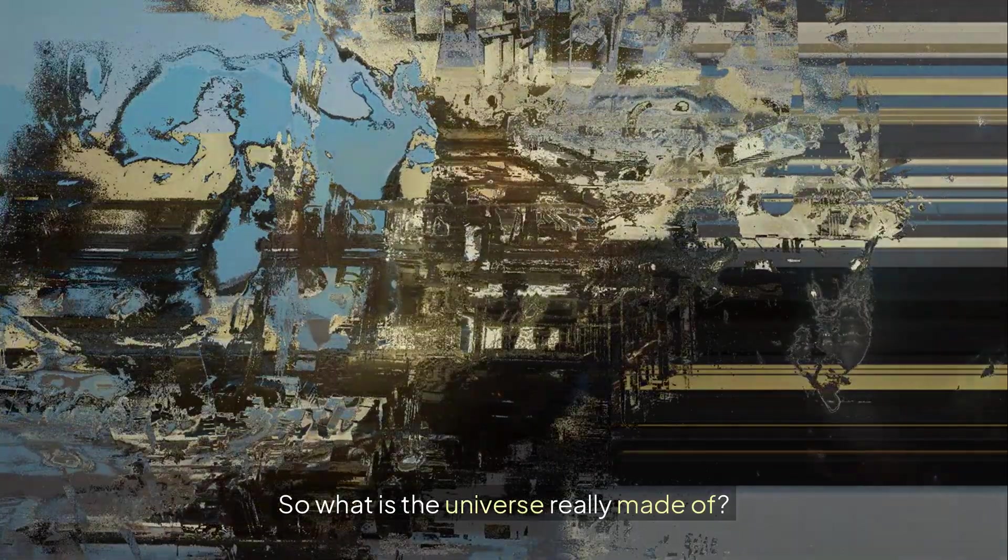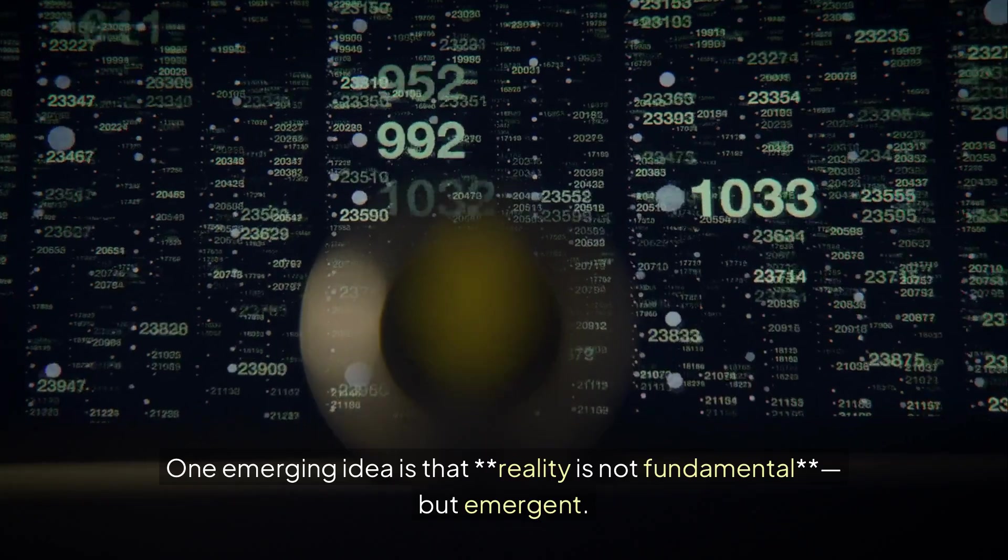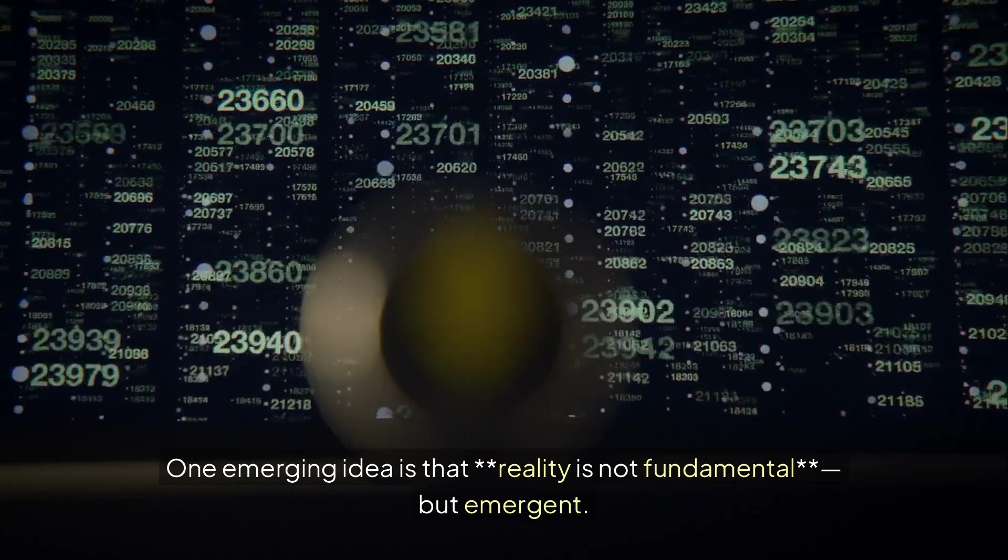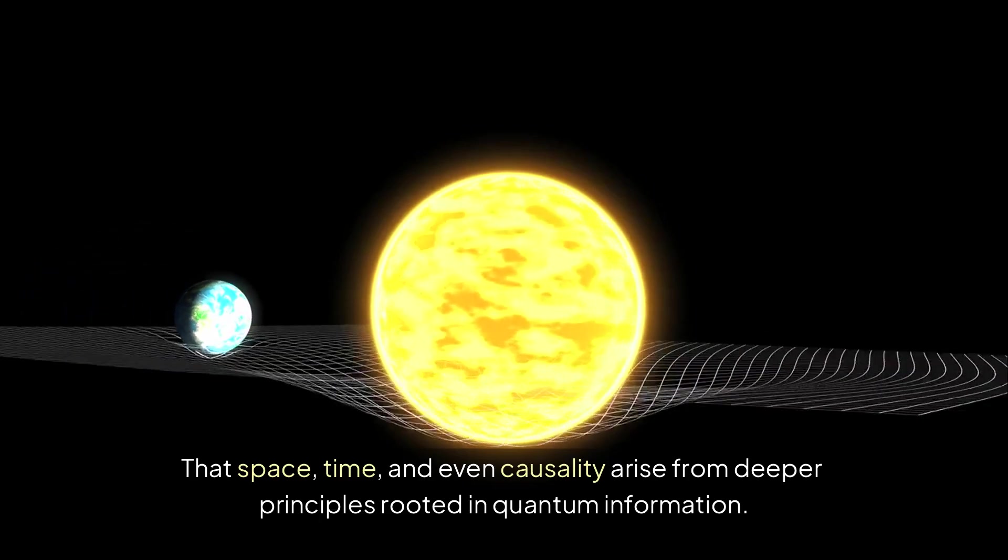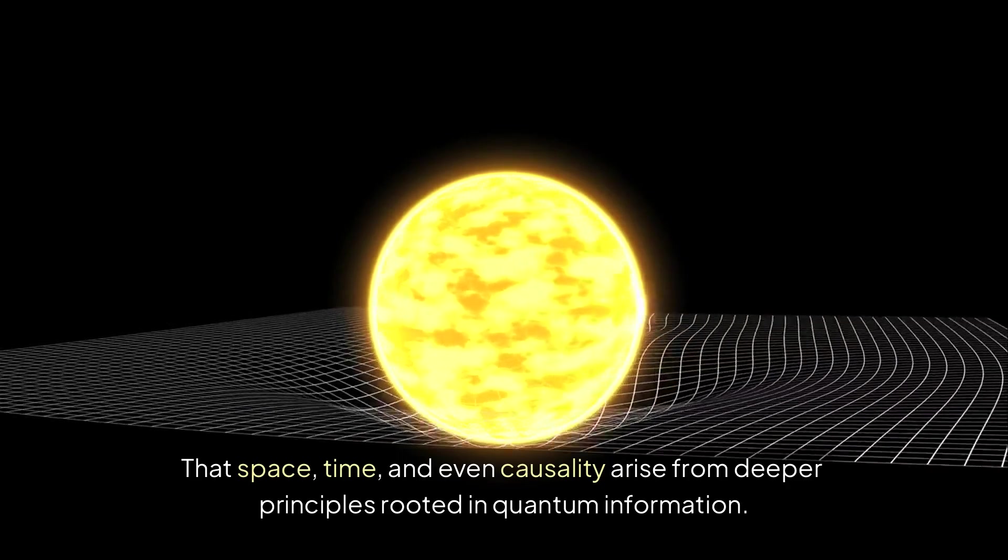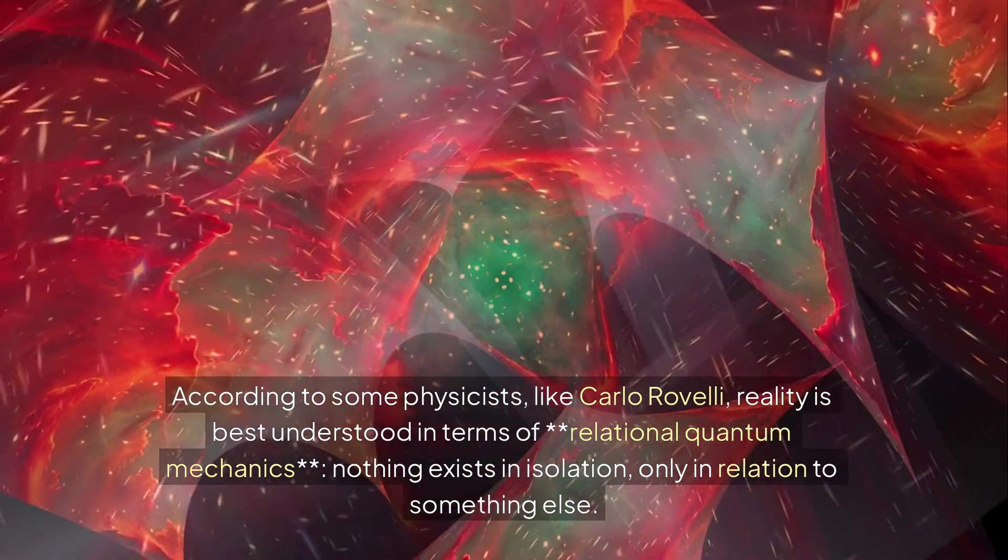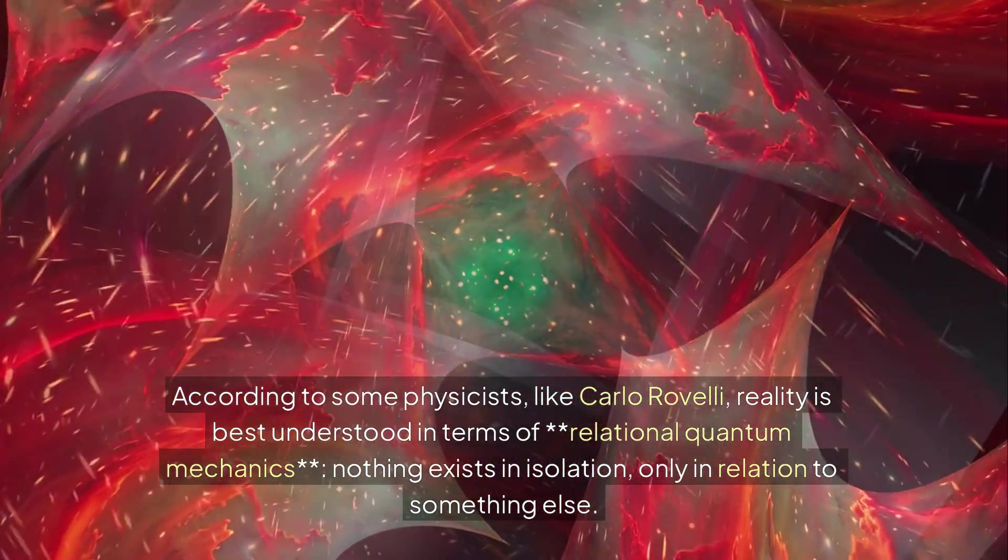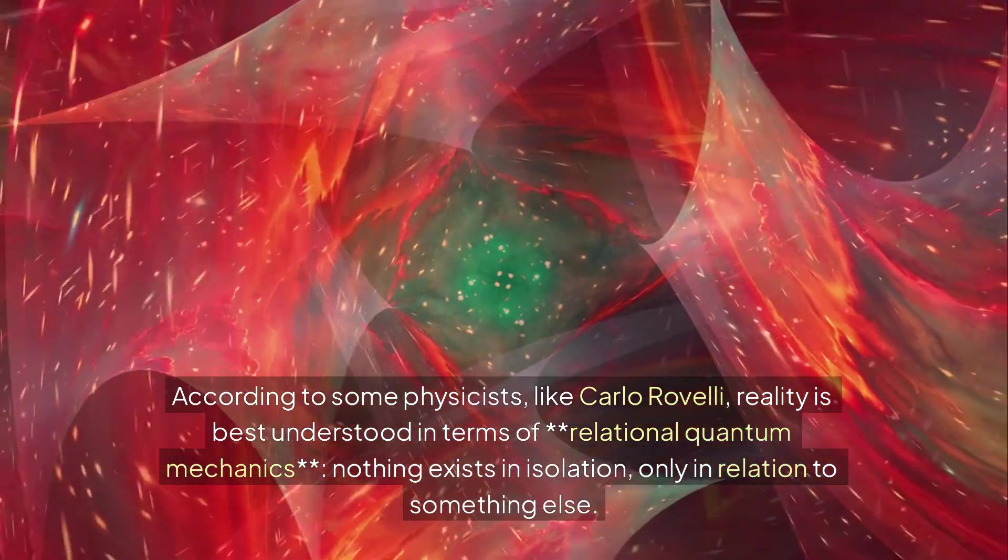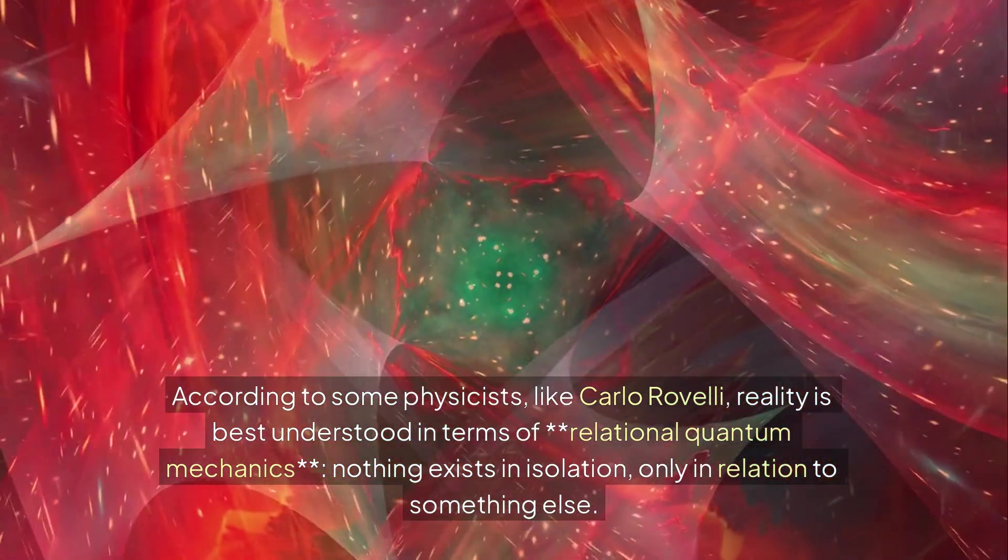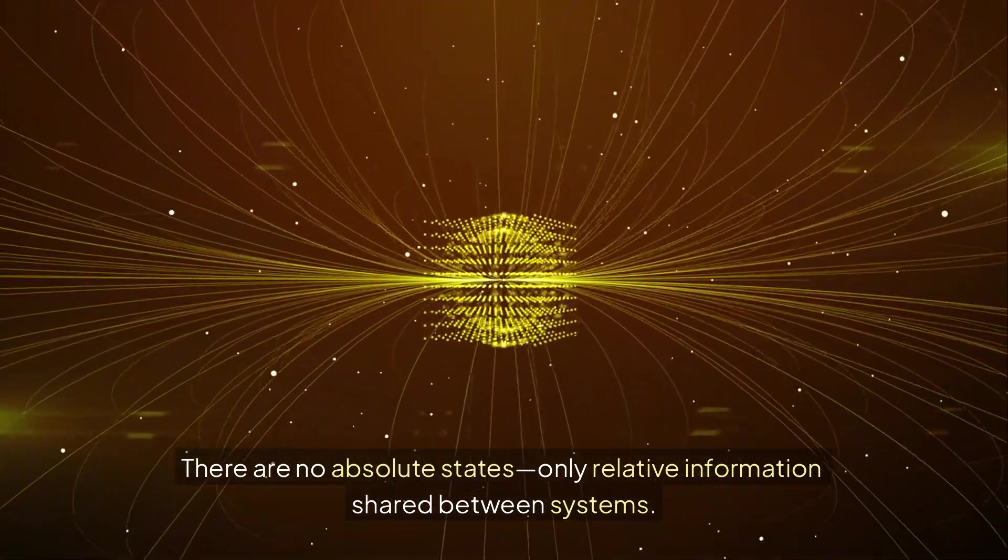So what is the universe really made of? Particles, waves, information, or something else entirely? One emerging idea is that reality is not fundamental, but emergent. That space, time, and even causality arise from deeper principles rooted in quantum information. According to some physicists like Carlo Rovelli, reality is best understood in terms of relational quantum mechanics. Nothing exists in isolation, only in relation to something else. There are no absolute states, only relative information shared between systems.